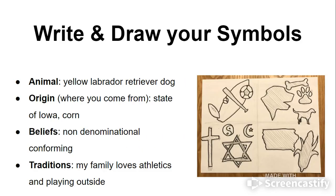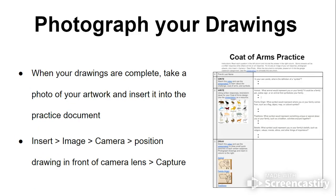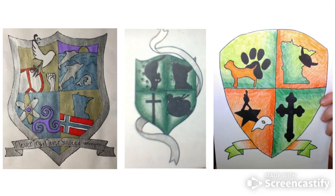And your job was to write and draw these different things down on the coat of arms activity. Again, notice how there are multiple drawings here. Today your goal is to finish up these drawings — a lot of people started them, but you should have several images for each one. Notice how I have four images for a dog, two images for my origin. Multiple things there, and then you photograph it and put it in your practice document.